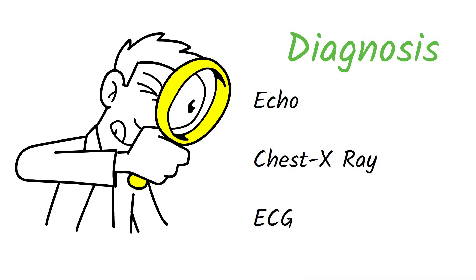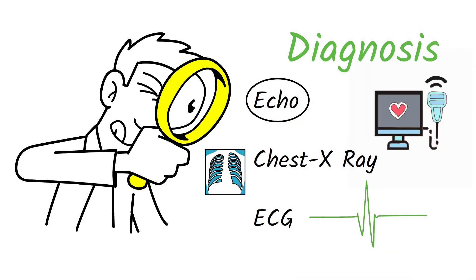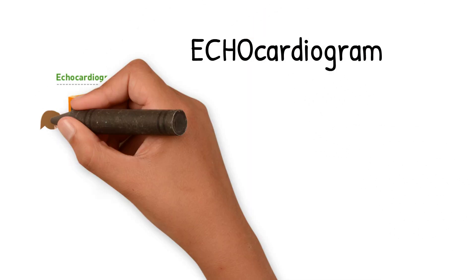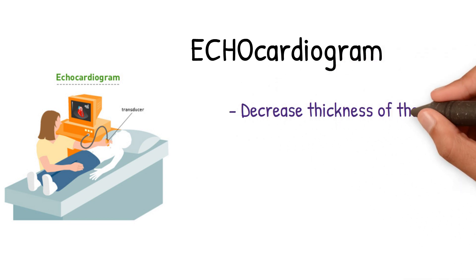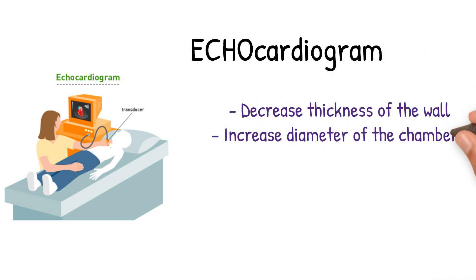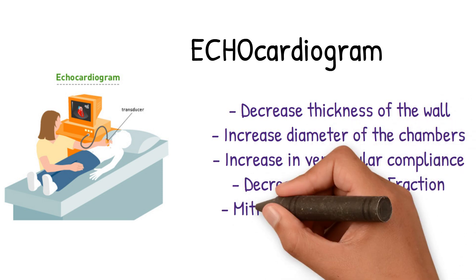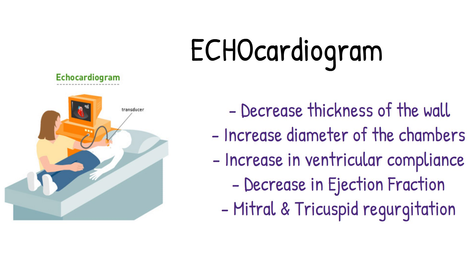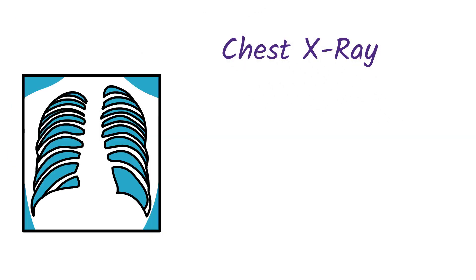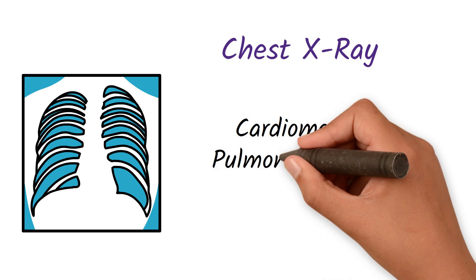The diagnosis of all types of cardiomyopathy is by echo, chest X-ray, and ECG, and the most important investigation is the echo. The echo in dilated cardiomyopathy will show a decrease in wall thickness, an increase in chamber diameter, an increase in ventricular compliance, and a decrease in ejection fraction. There will also be mitral and tricuspid regurgitation. The chest X-ray will show features of cardiomegaly and pulmonary edema.